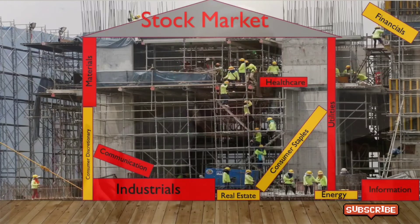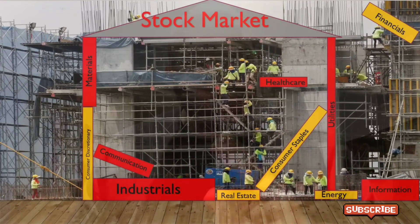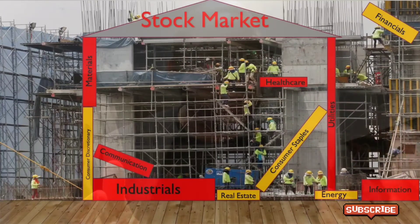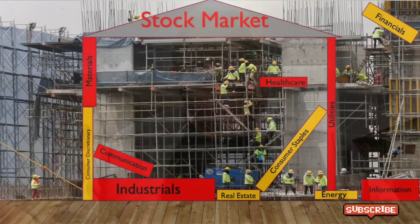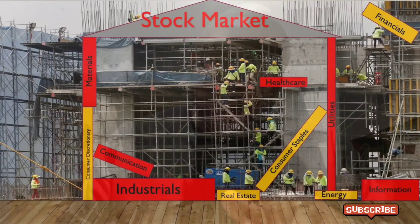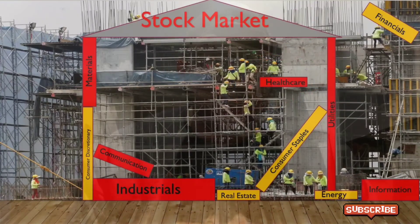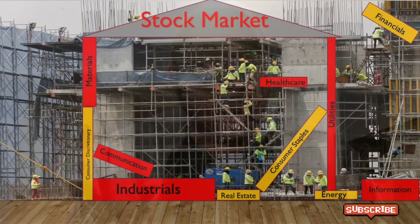It depends on who got affected most by the downturn. With the COVID-19 virus, transportation and vacation stocks got hit the most because people wanted to stay inside and couldn't spend money at resorts or restaurants — so that sector went down. A sector that went up was health care. Why? Because of the vaccine — they made billions and billions of dollars off of it.